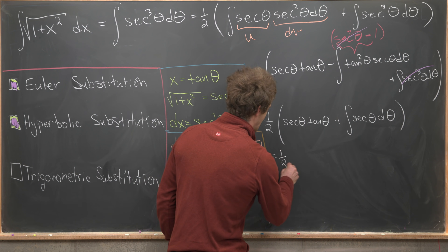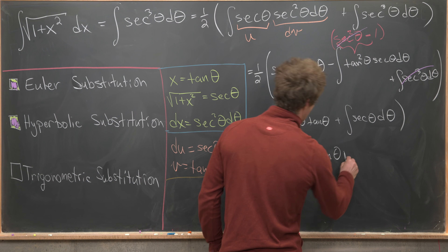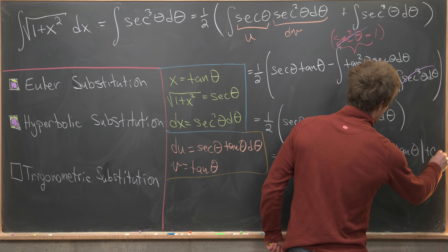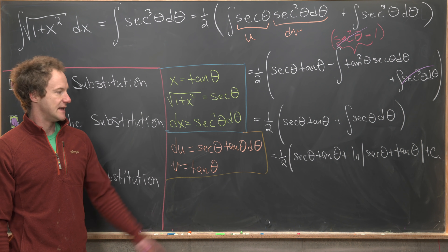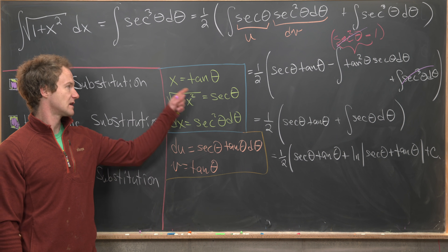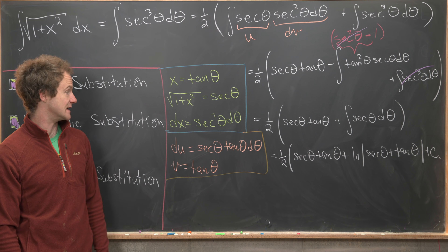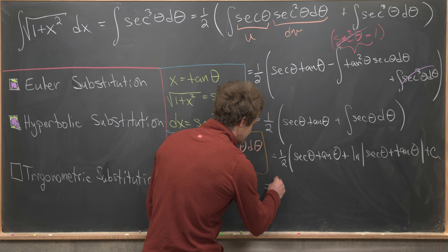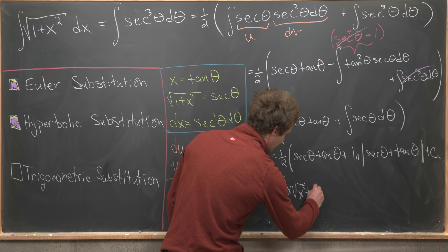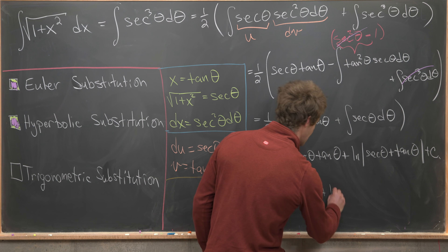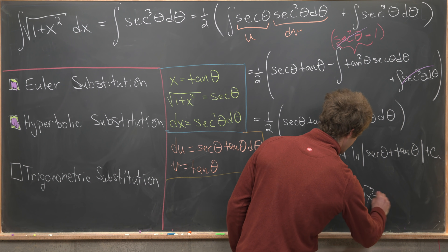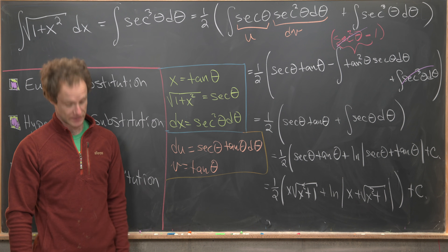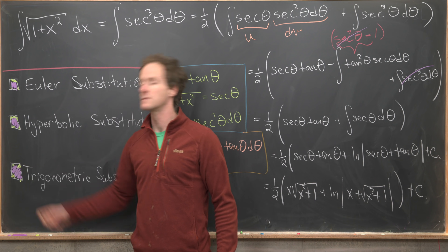The antiderivative of sec(θ) is ln|sec(θ) + tan(θ)|, which has its own derivation. So we have one-half times [sec(θ)tan(θ) + ln|sec(θ) + tan(θ)|] plus C. Back-substituting: sec(θ) = √(1+x²) and tan(θ) = x, giving the final answer one-half x√(x²+1) + one-half ln|x + √(x²+1)| + C, consistent with the previous two methods.